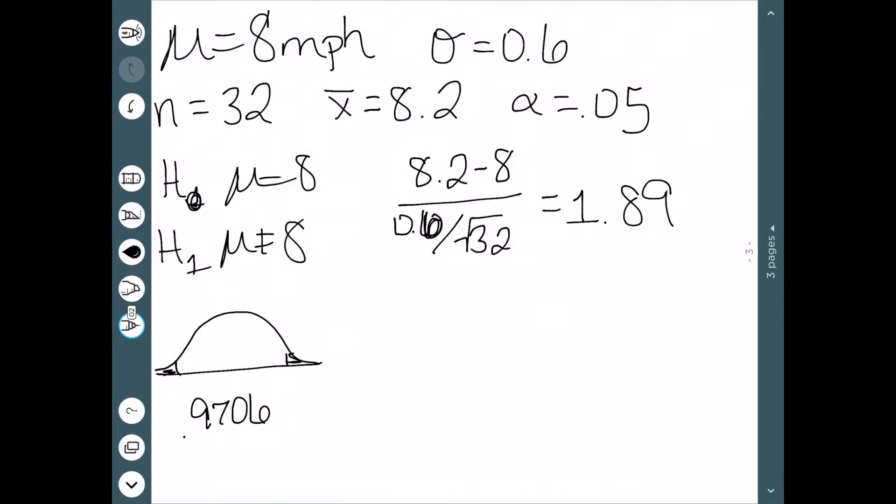Just like before, we need to do 1 minus .9706. And when we do, we get .0294. However, this is not the p-value. The p-value is a little bit trickier on these two-tailed tests. This is the p-value for one of the tails. Since we have two tails, we actually have to do 2 times .0294 to get the appropriate p-value of .0588, which is bigger than alpha.